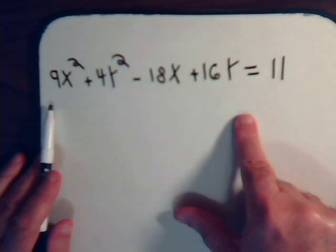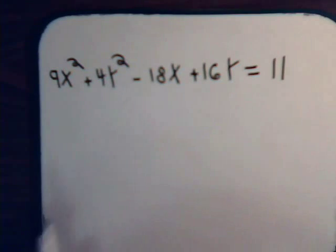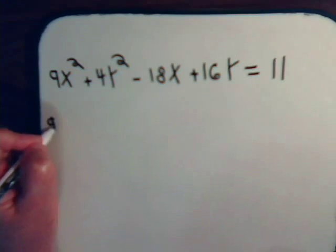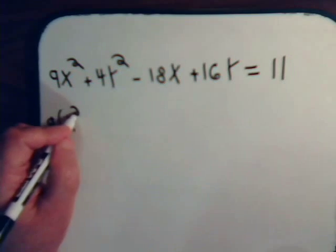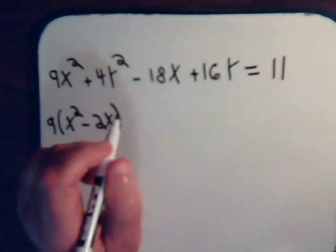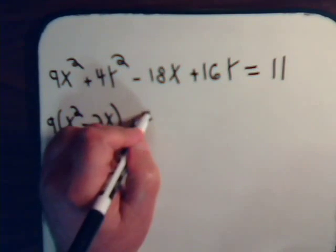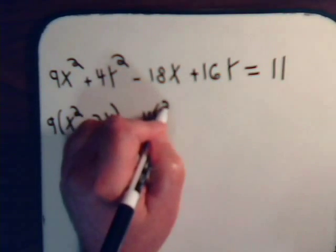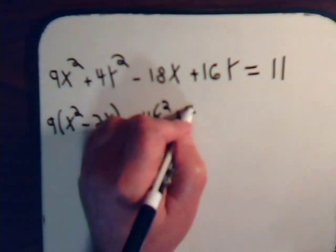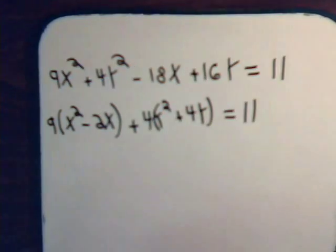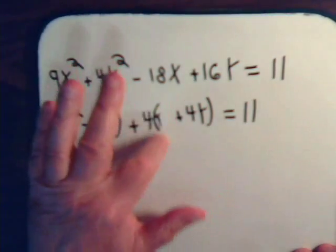Notice in this equation there is no xy term. We can combine terms here. We have 9 times x squared minus 2x plus 4 times y squared plus 4y equals 11. This should be y squared here.